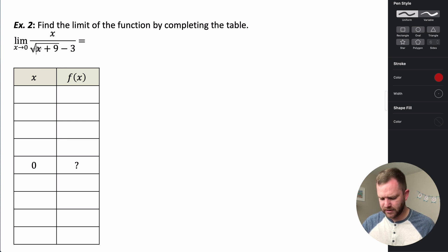Now if you plug in zero, you'll see zero plus nine, that's nine, square root of nine is three, three minus three is zero. So we get zero in the denominator and zero in the numerator, and we can't have that. That's an indeterminate form. So we want to look at the limit using this table.